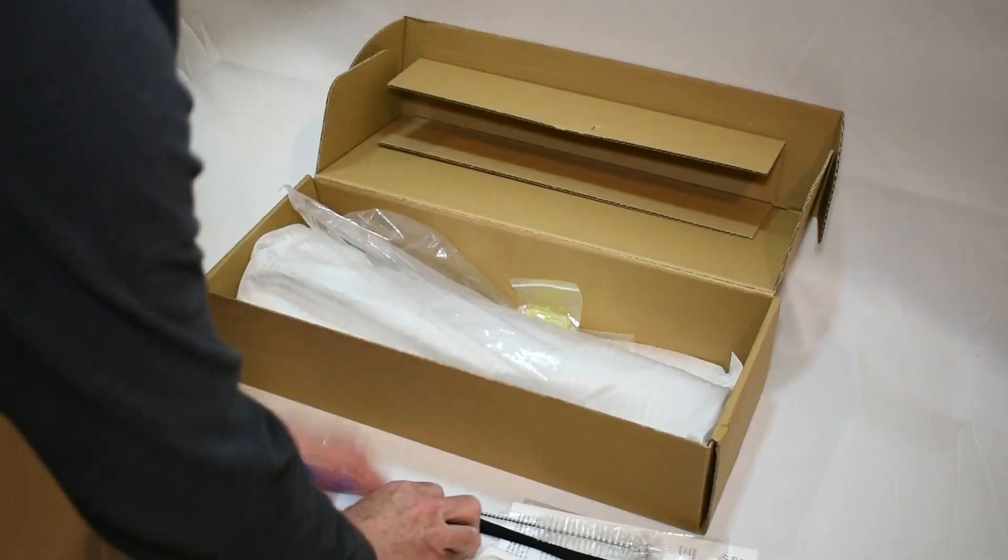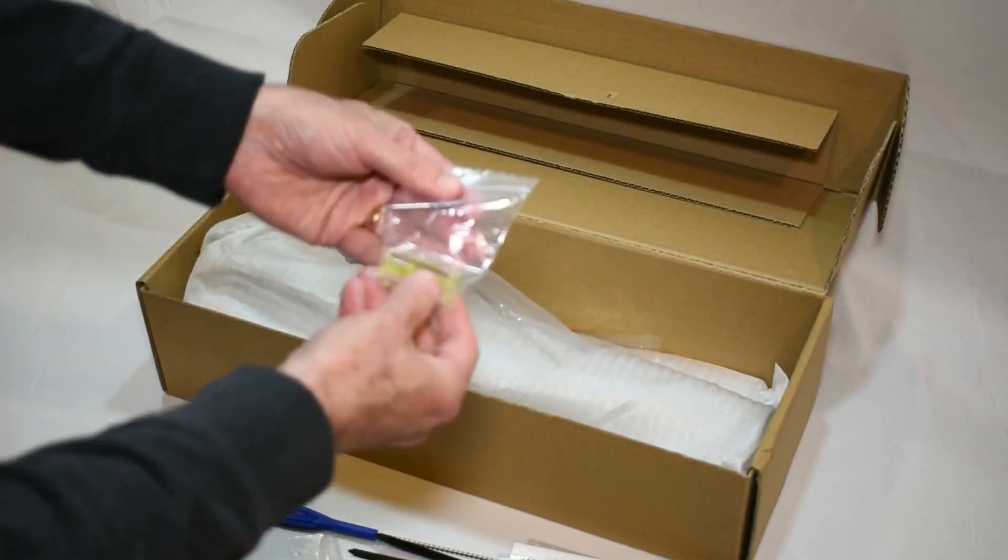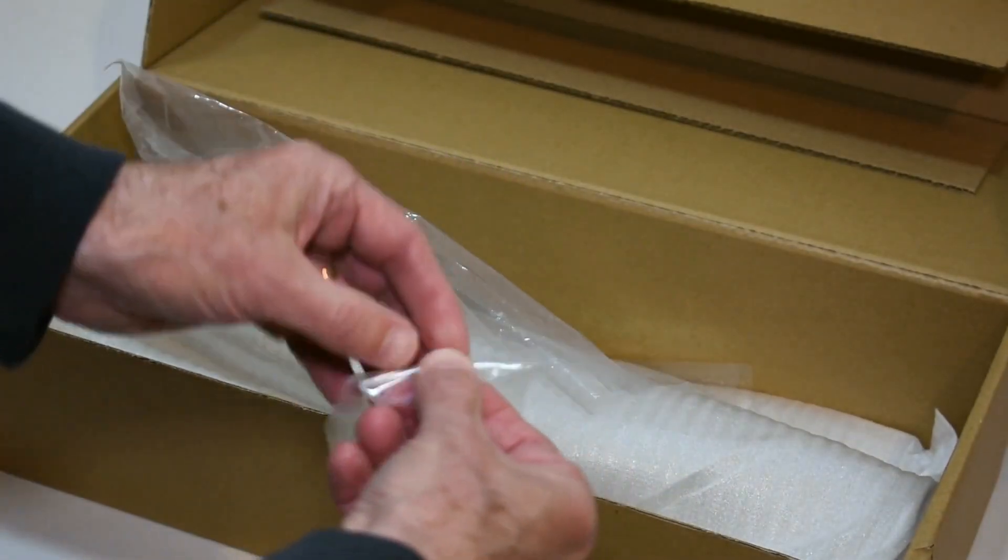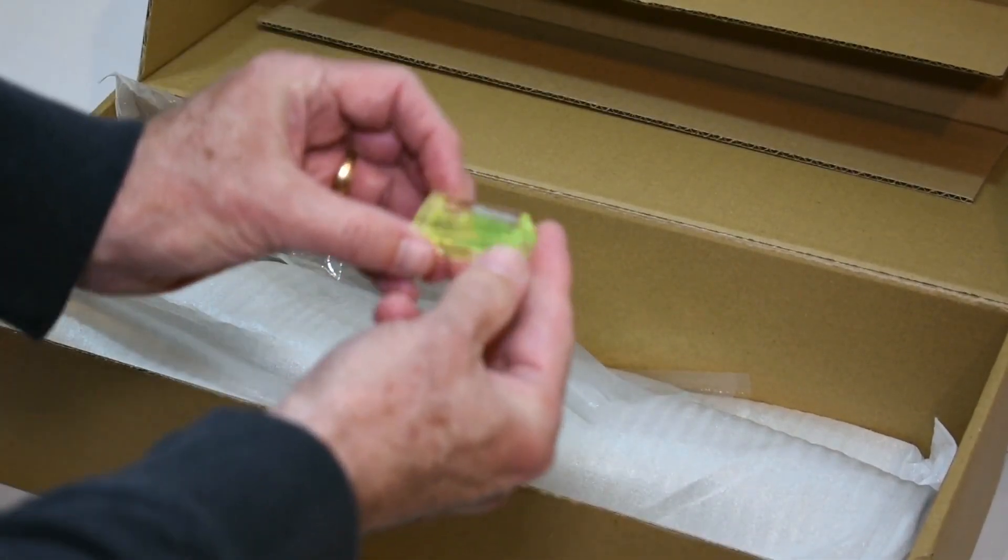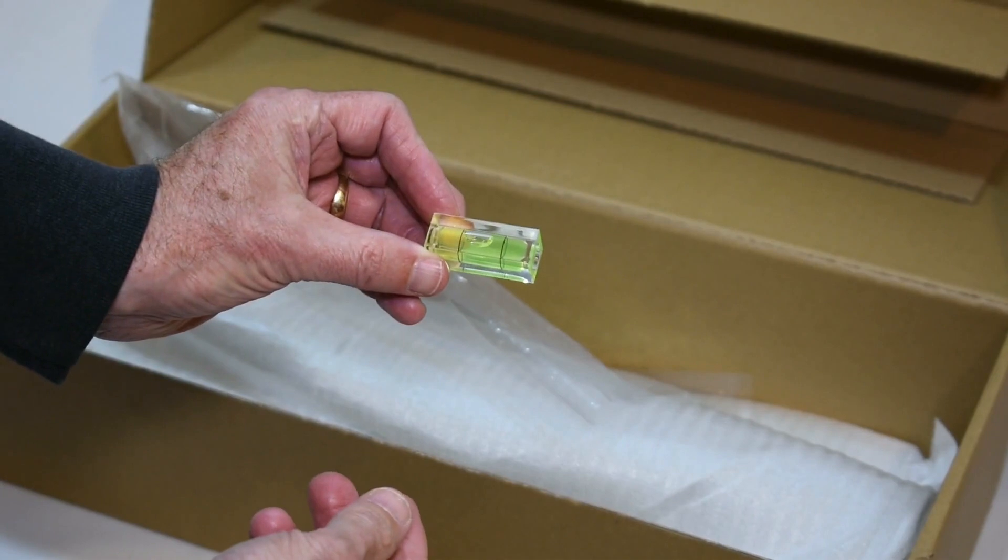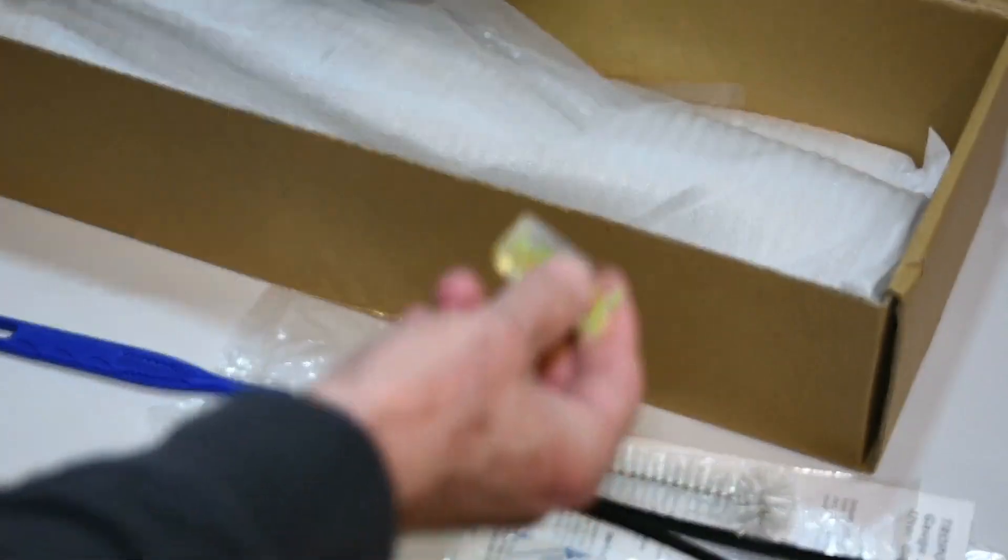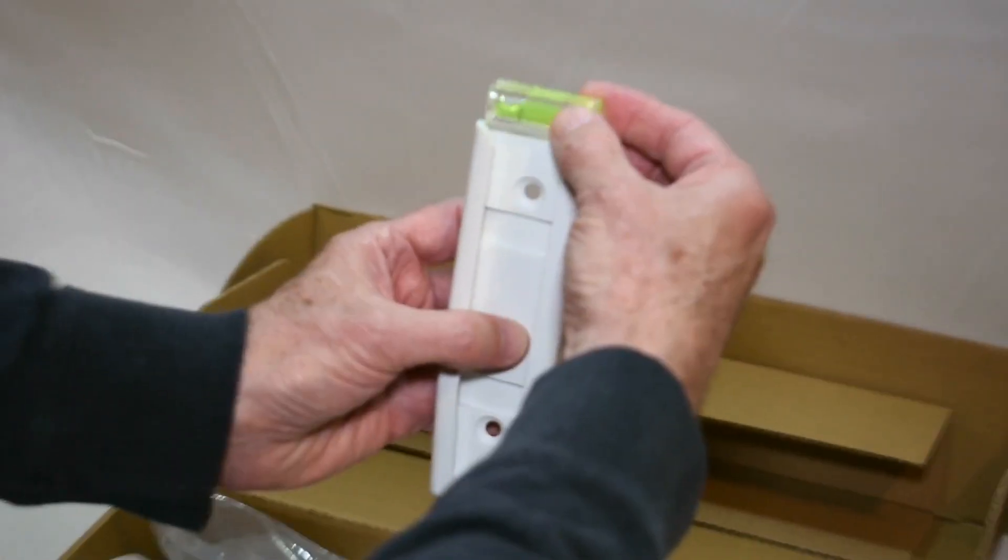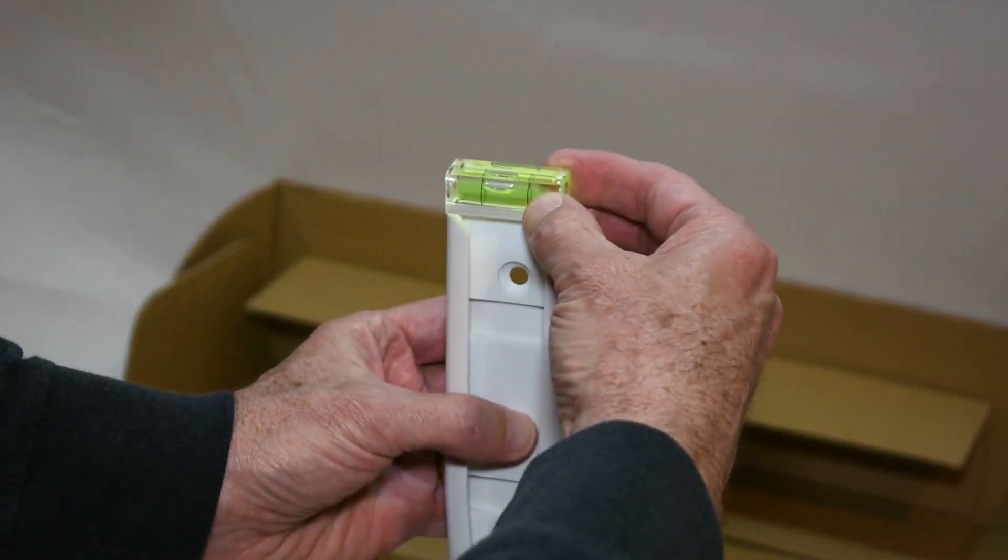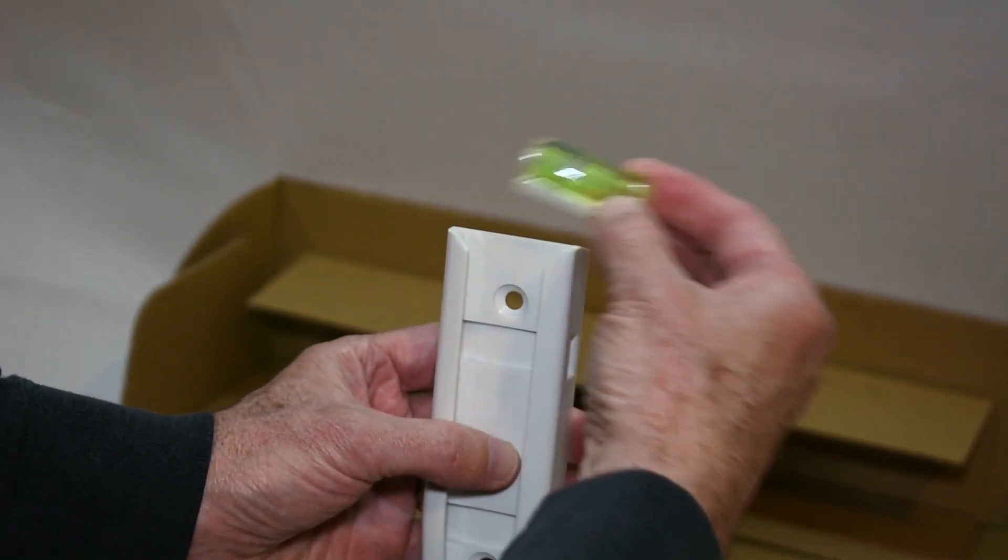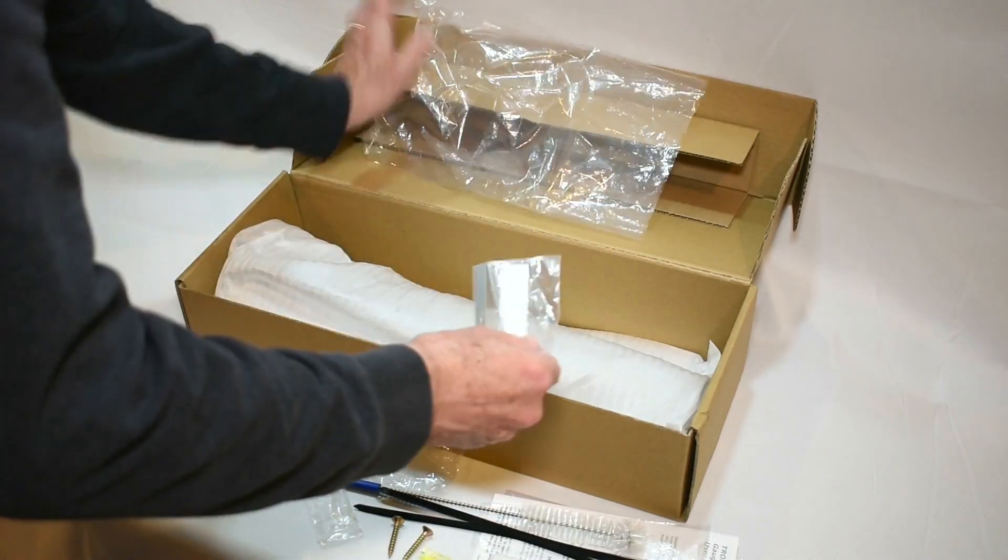Also to help with installation we'll include this bubble level which will help to install the mounting bracket perfectly horizontal. We'll demonstrate this also in another video but this is basically how that will work. It's just a temporary level that you'll use during the installation and then you can store it for other purposes.